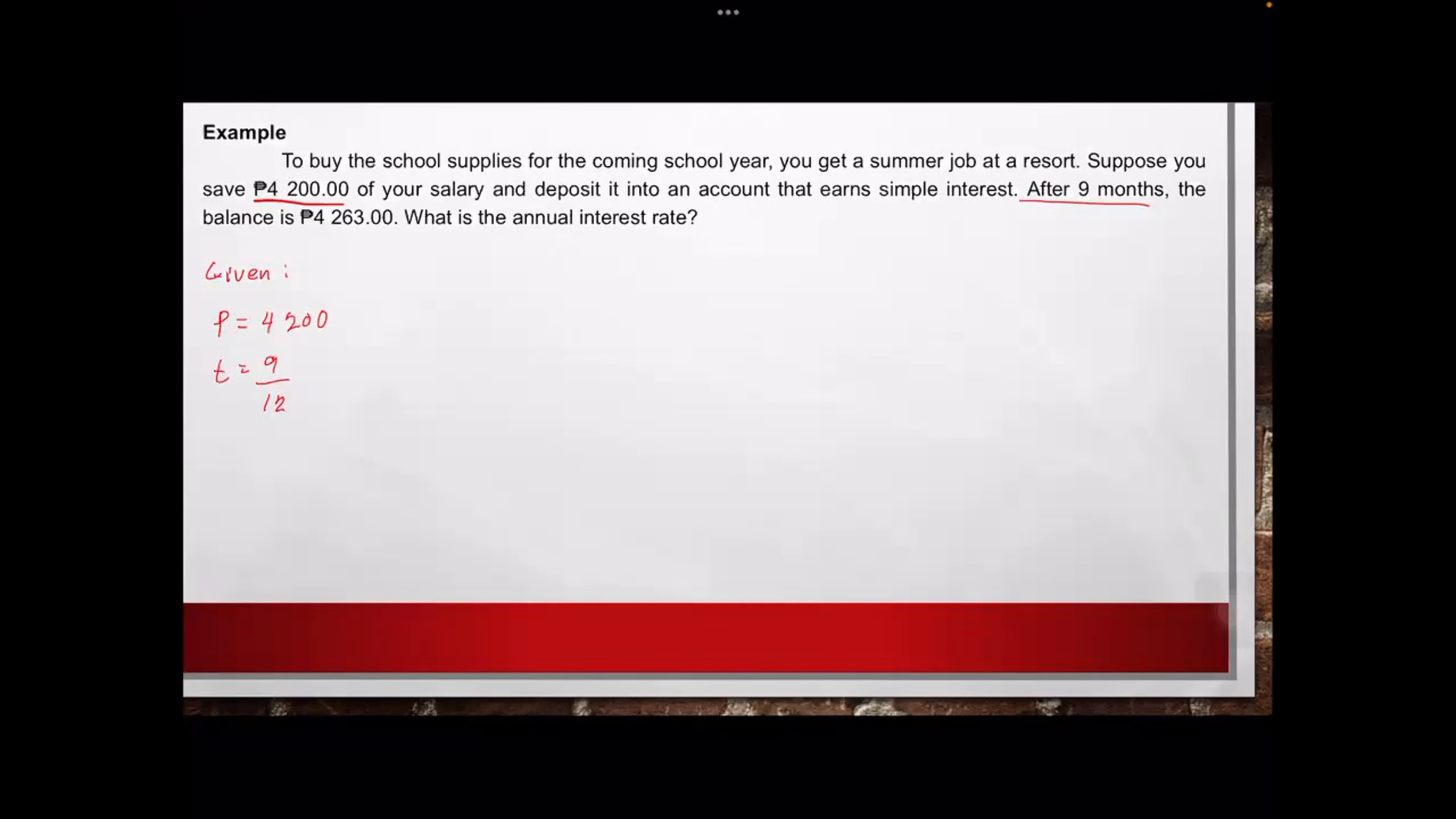So it states only 9 months, so we need to take this as a year. That's why this will be 9 over 12. In decimal, what is 9 over 12? It's 0.75. Next, we have the balance, that will be the A, which is 4,263.